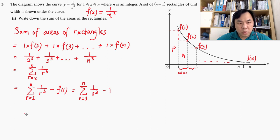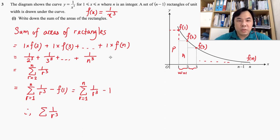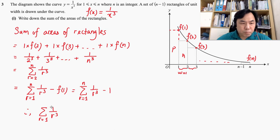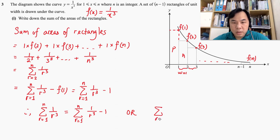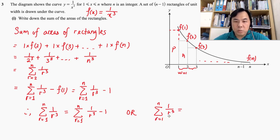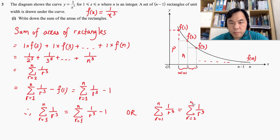I'm going to write down this conclusion so you can see what I'm doing. This is just an extra discovery — it's not what the question required. I have already fully answered the question. The area is given by the explicit sum, or in summation notation from r equal to 2 to n. The discovery shows that the sum from r equal to 2 to n of 1 over r cubed equals the sum from r equal to 1 to n of 1 over r cubed, minus 1.